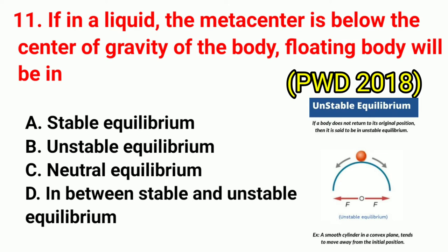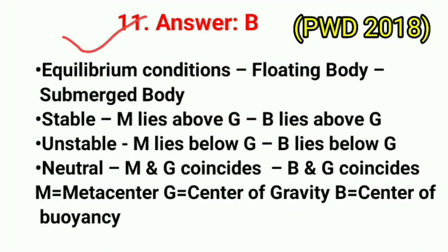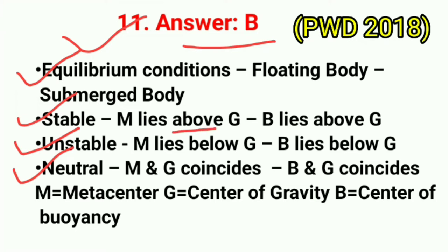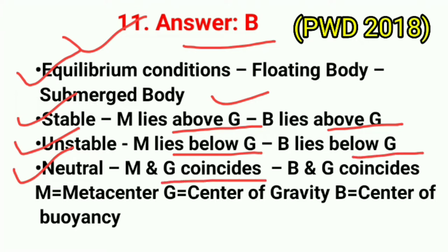Question No. 11. If in a liquid the metacentre is below the centre of gravity of the body, the floating body will be in? Correct answer is option B: unstable equilibrium. There are 3 conditions of equilibrium: stable, unstable, and neutral. A floating body acquires stable condition when M lies above G; unstable condition when M lies below G. For neutral, M and G coincide. Here M = metacentre, G = centre of gravity, B = centre of buoyancy.